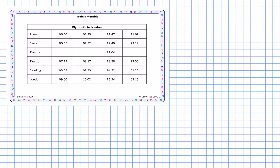The reason we use 24-hour clock time for train timetables is to help make sure that passengers show up at the correct time. If we were using AM and PM, it would be very easy for people to confuse, for example, 7:19 AM for 7:19 PM, and people would often show up at the wrong time for their train.